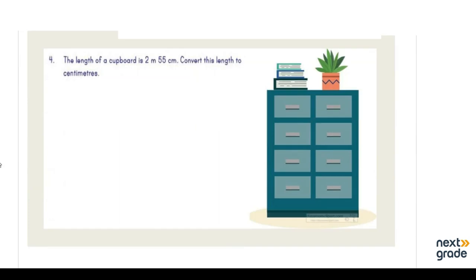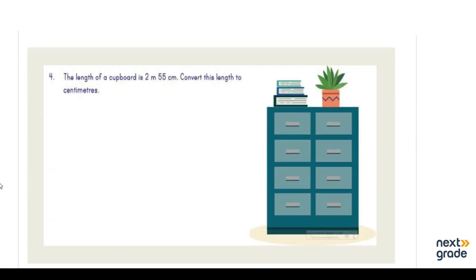Moving on to the next slide. Question number four is a word problem: the length of a cupboard is 2 meters and 55 centimeters. We have to convert this length into centimeters, which means converting from a bigger unit to a smaller unit.